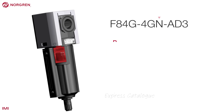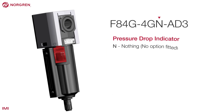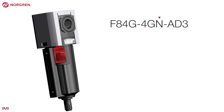In our example, the seventh digit represents the option for a pressure drop indicator. The N stands for nothing, meaning no option fitted. Some units offer an option, others don't, and N is the default.